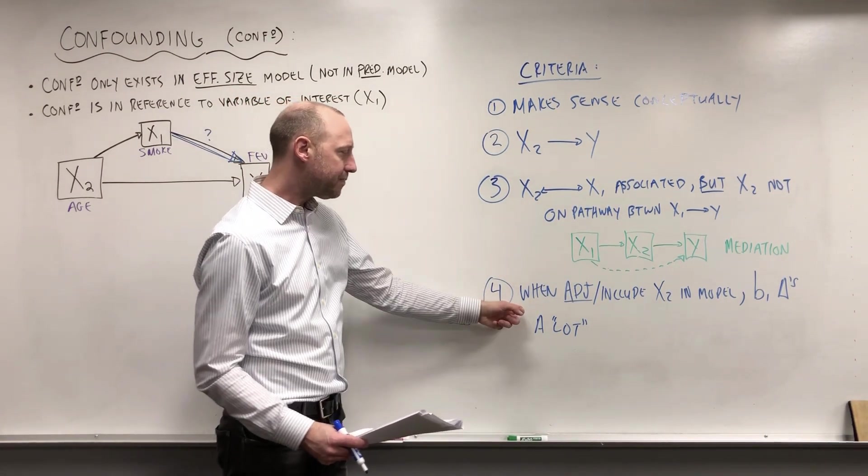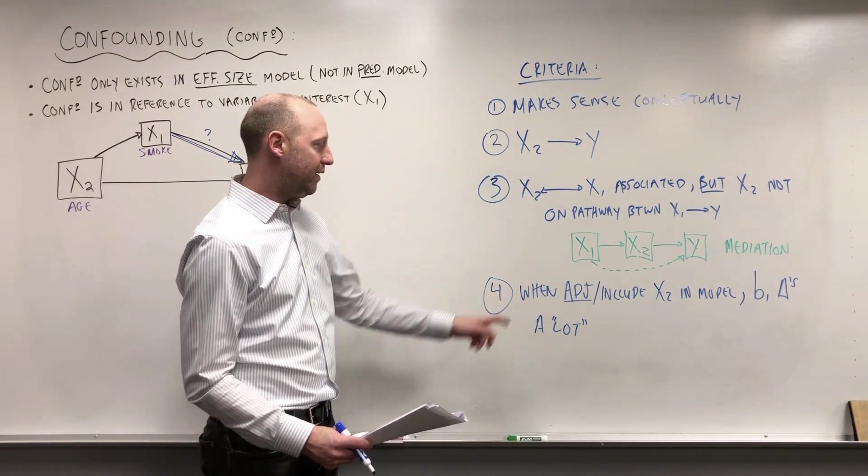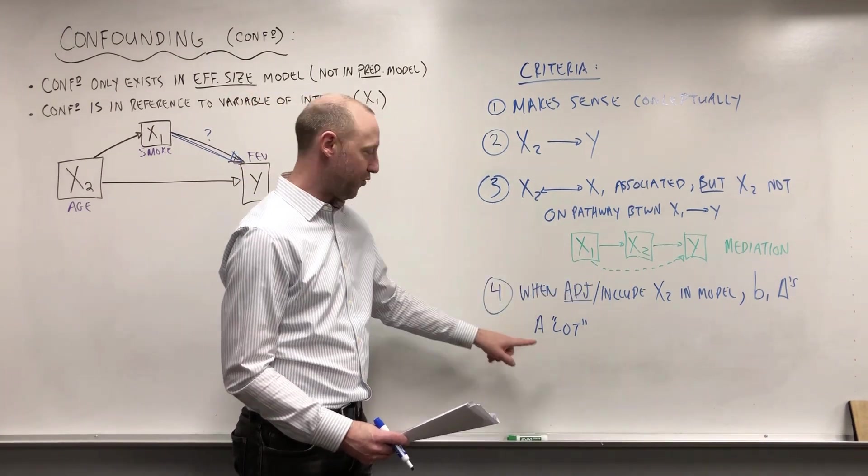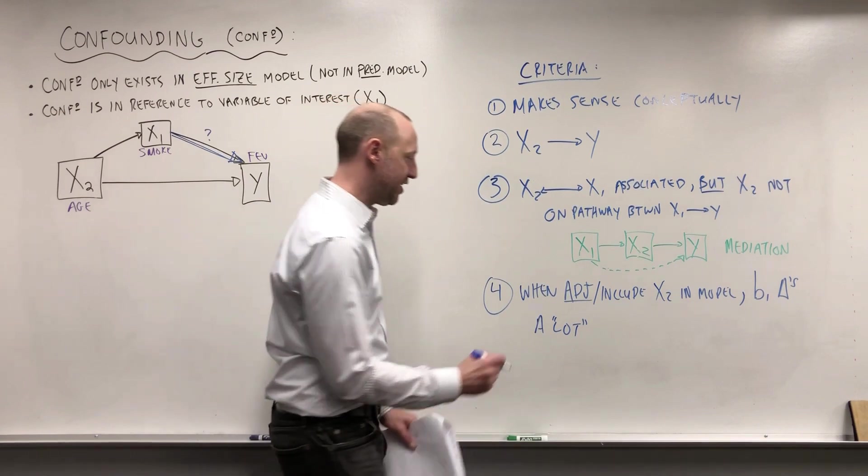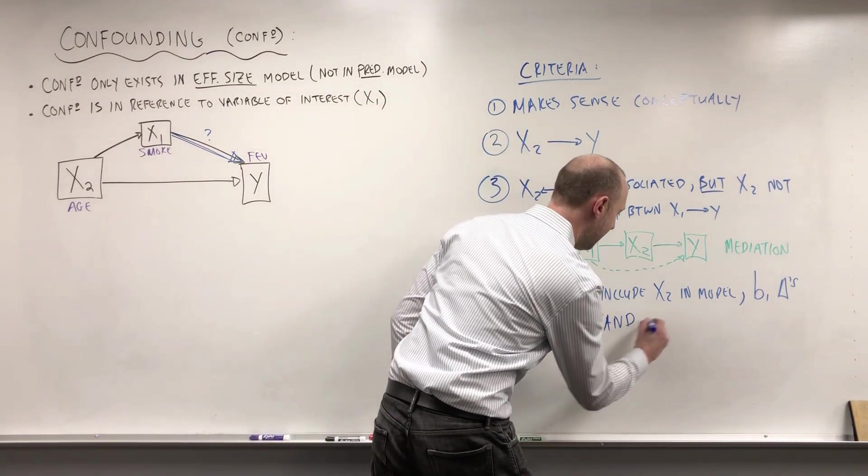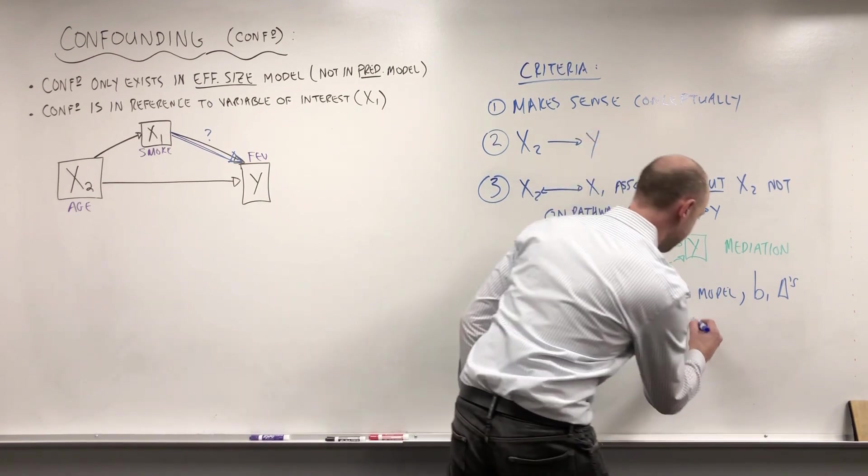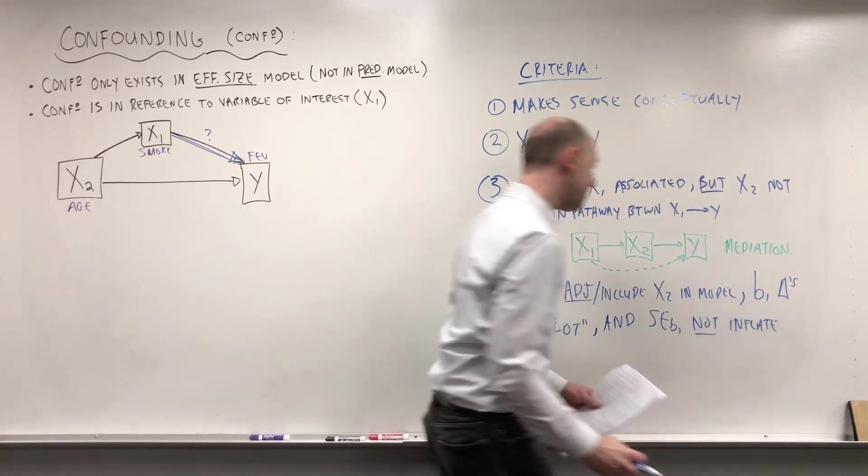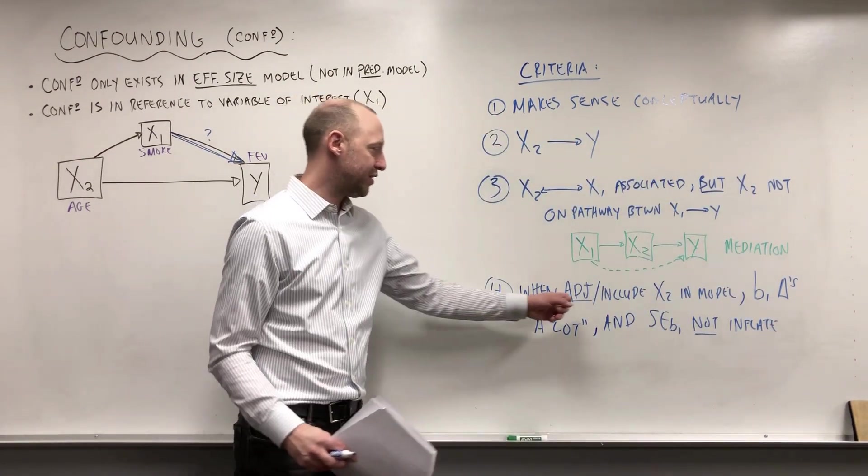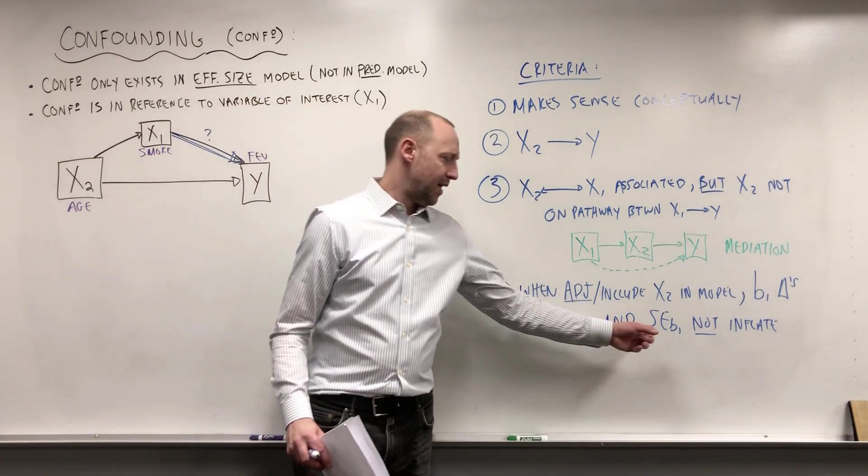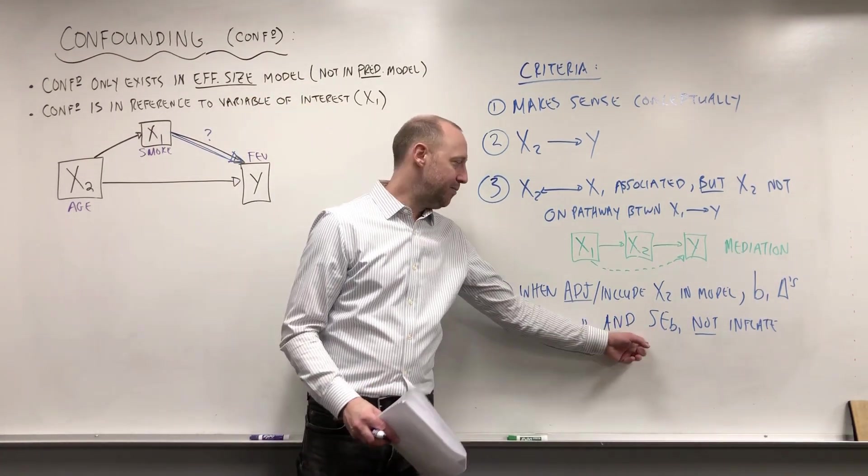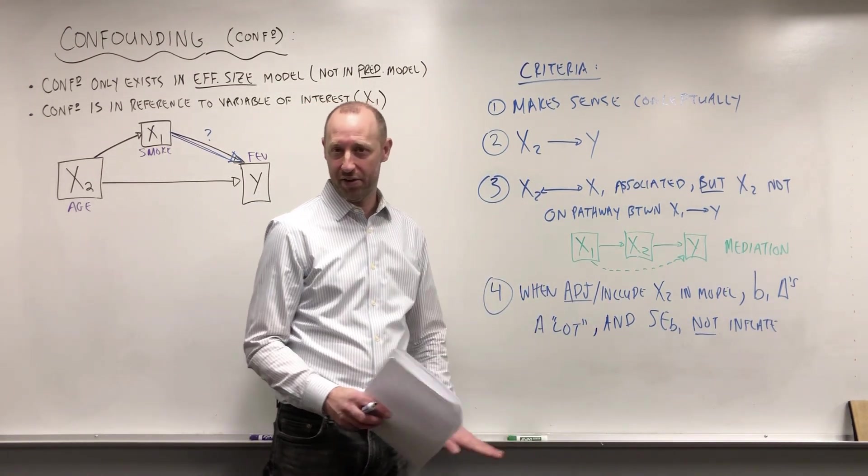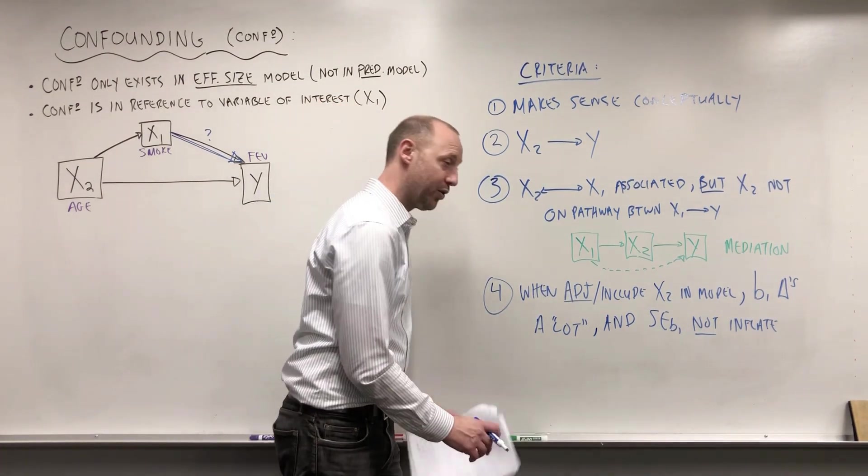We want to really lean on the concepts. Does it make sense conceptually? But what we're going to see is, when we adjust for or include X2, the confounder in the model, this B1 coefficient, the coefficient for our variable of interest, is going to change a lot. And the standard error for B1 will not inflate. It might stay the same, might go down a bit, might go up a little bit, but it's not going to increase a lot. A big increase is what we're going to think of as a collinearity error.